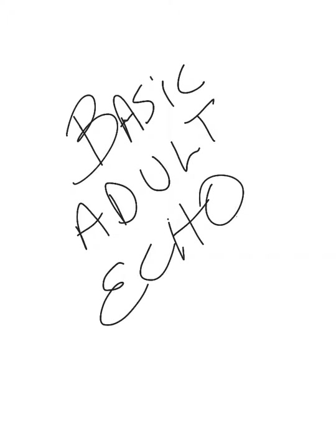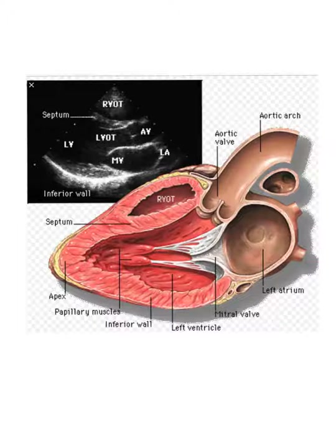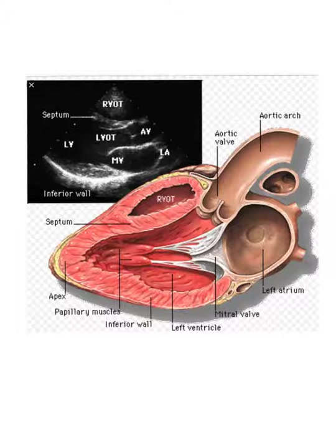We're going to start off with the first view in Adult Echo, which is the long axis view. So here's a pretty famous image. This was done by, I think, Mayo Clinic many years ago. A lot of people use it as an explanation of the long axis because it shows you the anatomical cut of the long axis - like cutting the heart in half and looking at the chambers in a longitudinal cut.